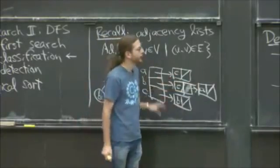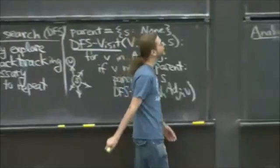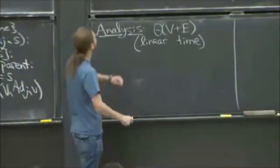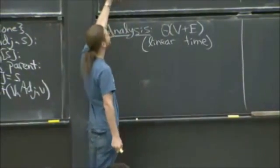We have to traverse that whole structure. The reason it's order V plus E is, first, as you were saying, you're visiting every vertex once in this outer loop.